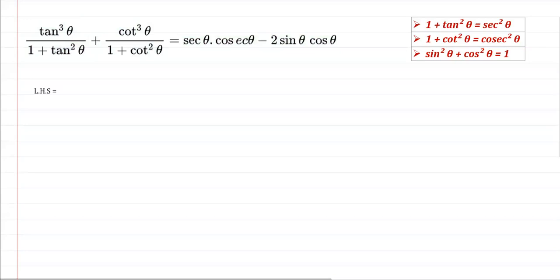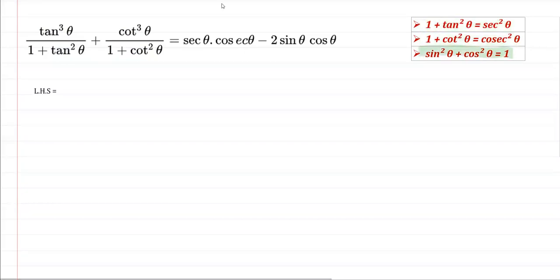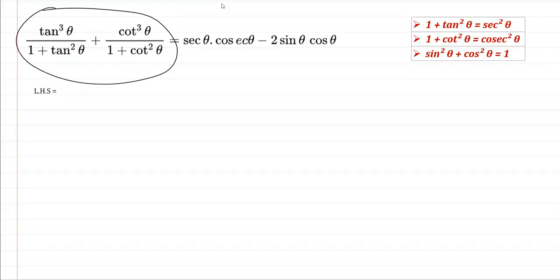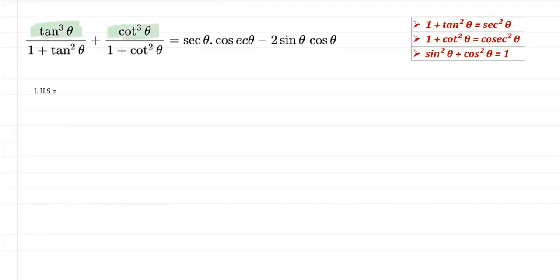For solving this, we'll primarily be using these three identities: 1 + tan²θ = sec²θ, 1 + cot²θ = cosec²θ, and sin²θ + cos²θ = 1. The first thing we do in the LHS is convert tan — we can write tan as sinθ/cosθ and cot as cosθ/sinθ.